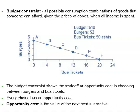Every point on or inside the budget constraint shows a combination of burgers and bus tickets that I can afford. Any point outside the budget constraint is not affordable because it would cost more money than I have in my budget.